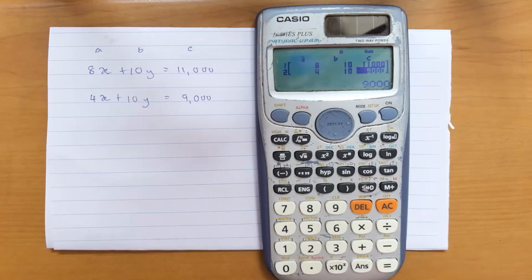We have entered all the values. Now press equal. For X, you are getting a value of 500. Again press equals. For Y, you are getting a value of 700. So this is how you can do a two-variable linear equation calculation using the Casio FX-991 ES plus calculator.